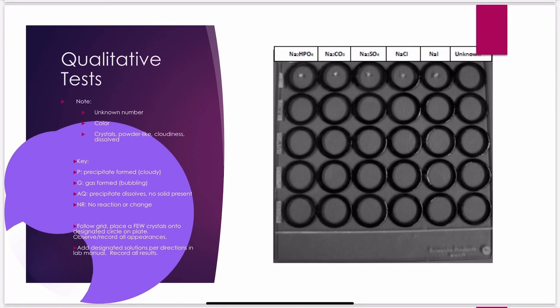For the qualitative tests, you will have an unknown, so make sure you're writing down your unknown number. Every lab, that's how I'm actually able to fully grade your reports — your unknown identity is part of the rubric. Record the color of your substance: is it white, clear, crystals, powder? Whatever color you see — I've seen things like peach, that's fine. The reason is at the end, you're going to identify your unknown by comparing it to what you saw in the other substances, so the more specific you are, the easier it will be.